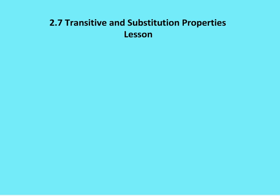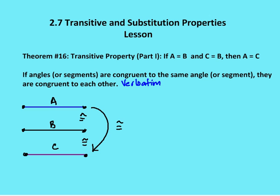So what is the transitive property, and what is substitution? There are two parts of the transitive property. The first part is: if A is equal to B and B is equal to C, then I can say that A is equal to C. Transitive property and substitution are very similar. There's some chain or linking between the two, and that chain or link is the middle portion of the equality, which would be B.